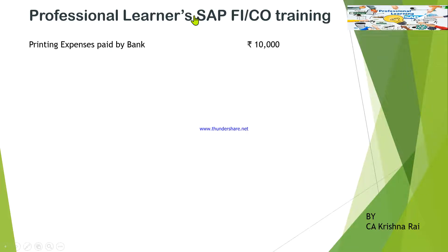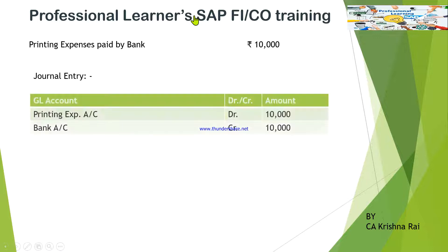The accounting entry is: printing expenses paid by bank, 10,000 rupees. This is the business transaction for which we need to pass an accounting entry. The general entry would be: printing expense account debited 10,000 rupees, and bank account credited by 10,000 rupees. This is the accounting entry we are going to process in SAP.